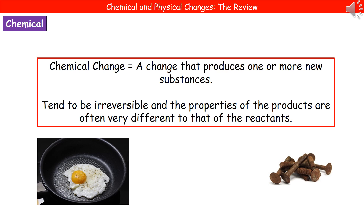If we then consider the chemical change, this is where we've produced one or more new substances as the result of a chemical reaction. A couple of key examples: if you're cooking an egg, for example, or rusting.